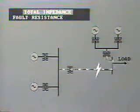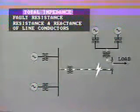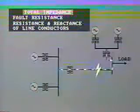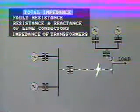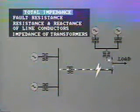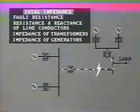The total impedance is made up of: A, resistance of the fault itself; B, resistance and reactance, that is, impedance of the line conductors; C, impedance of any transformers or reactors in the circuit; and D, impedance of the generating source. The calculation of probable fault currents for different conditions is a very important task for the system designer.